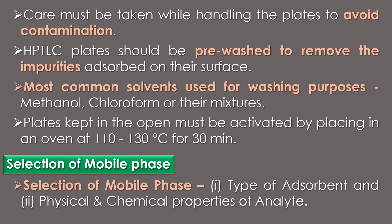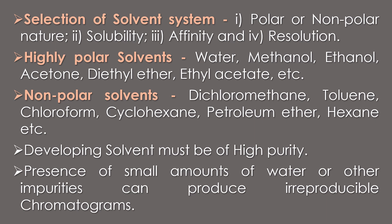The selection of mobile phase is made on two bases: the type of absorbent, and the physical and chemical properties of the analyte. The solvent system is selected considering the nature of components to be separated, such as polar or non-polar nature, solubility, affinity, and resolution. Higher polar solvents include water, methanol, ethanol, acetone, diethyl ether, and ethyl acetate. Non-polar solvents include dichloromethane, chloroform, cyclohexane, petroleum ether, and hexane. The developing solvent must be of high purity, as small amounts of water or other impurities can produce irreproducible chromatograms.